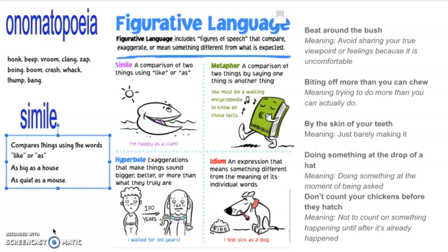The last figurative language we're going to talk about is hyperbole. A hyperbole is an exaggeration that makes things sound bigger, better, or more than what they truly are. For example, a boy saying 'I waited for a hundred years' — that boy didn't wait a hundred years, but in your mind you can visualize a person who thinks he had to wait forever. It seems like a hundred years before my birthday comes — it's not a hundred years, but it just seems so long. Or I might say California is a million miles away because that's where my son lives and it feels that way, even though he's not really a million miles away. That's an example of a hyperbole.